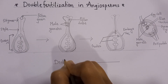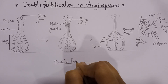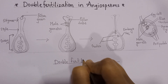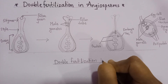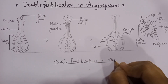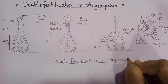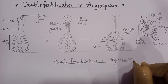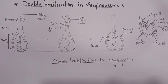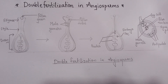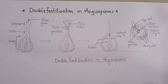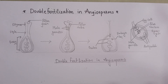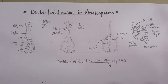The name of the diagram is 'Double Fertilization in Angiosperms.' At the end we will also label the diagram. I think it is more visible and nicer with the pencil rather than sketch pens. Thank you.